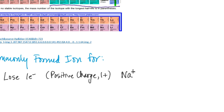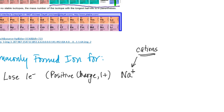The formula for the sodium ion is written as Na⁺. These positively charged ions are called cations, and we name them by just taking the element name — so this would be the sodium cation.